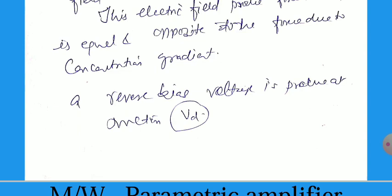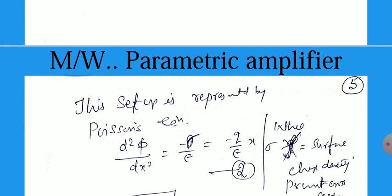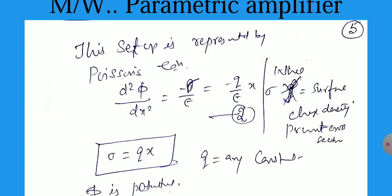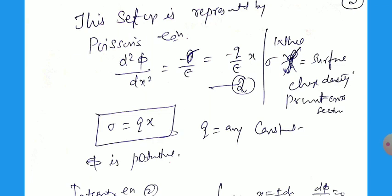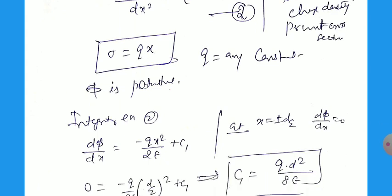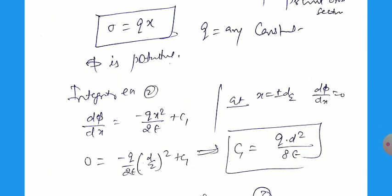The reverse bias voltage V_D produced at the junction is represented by the Poisson equation as studied in undergraduate classes. Here, d²φ/dx² equals the surface charge density sigma divided by epsilon. Sigma equals Q times x. On integrating, we obtain dφ/dx equal to minus Q x² by 2 epsilon plus constant C1. Using the boundary condition at x equal to plus or minus d by 2, the potential gradient dφ/dx is 0, we obtain C1 equal to Q d² by 8 epsilon. Substituting back: dφ/dx equals minus Q x² by 2 epsilon plus Q d² by 8 epsilon, giving the potential gradient.